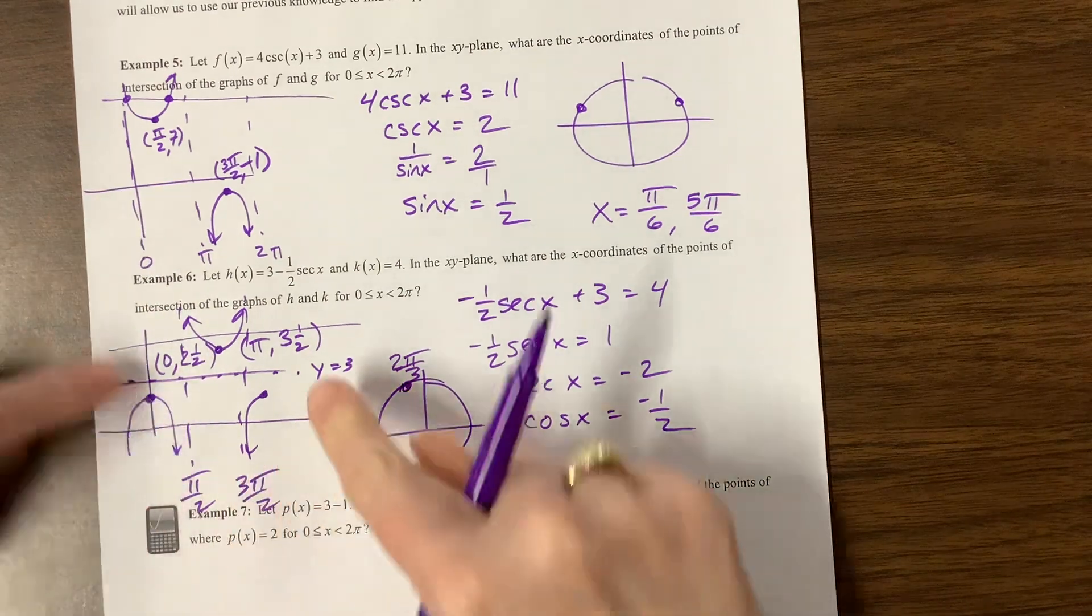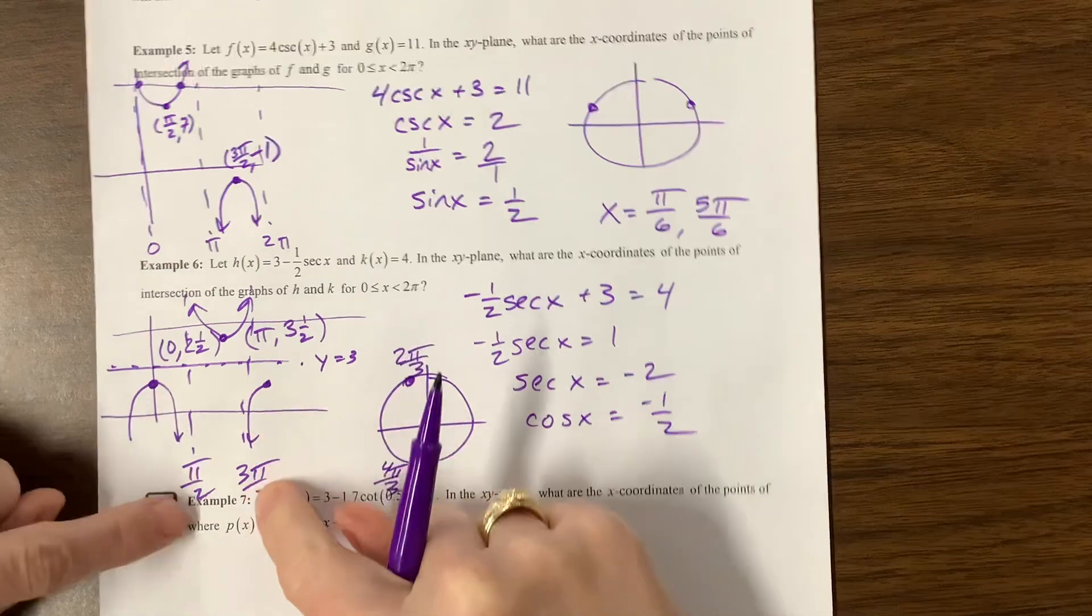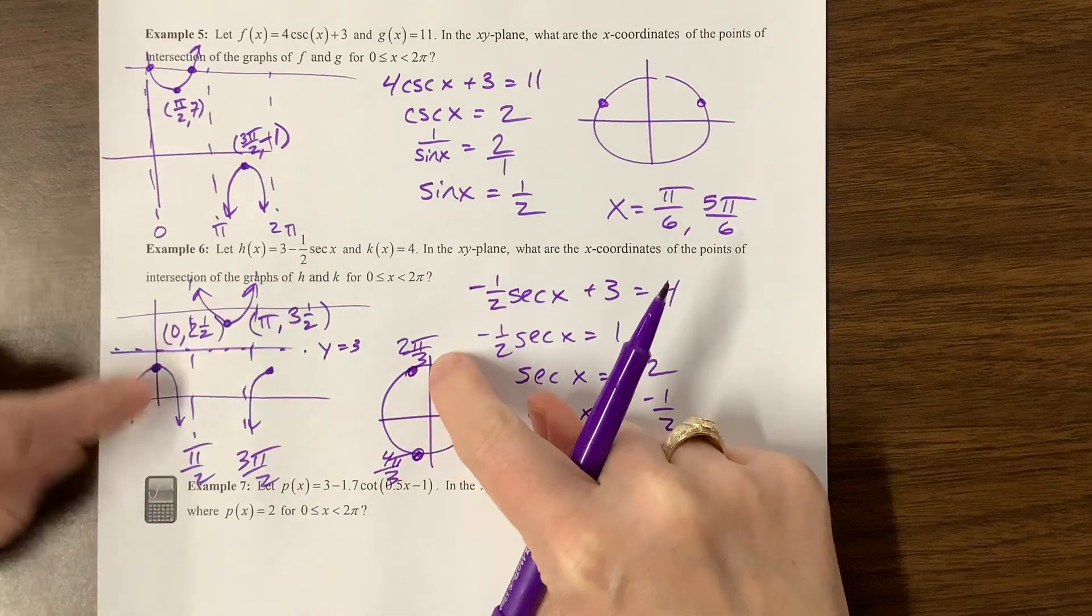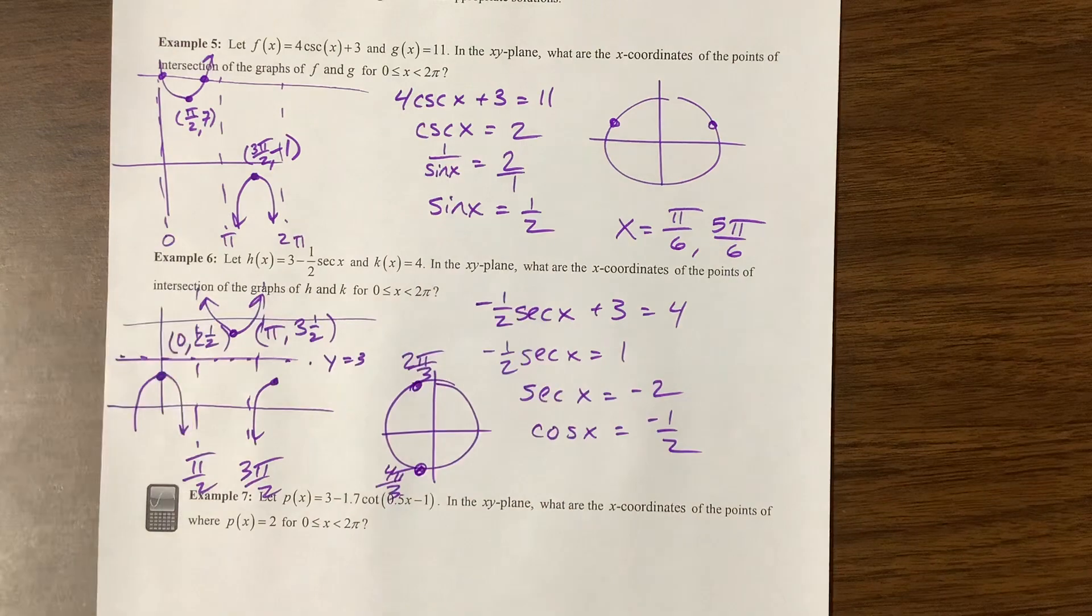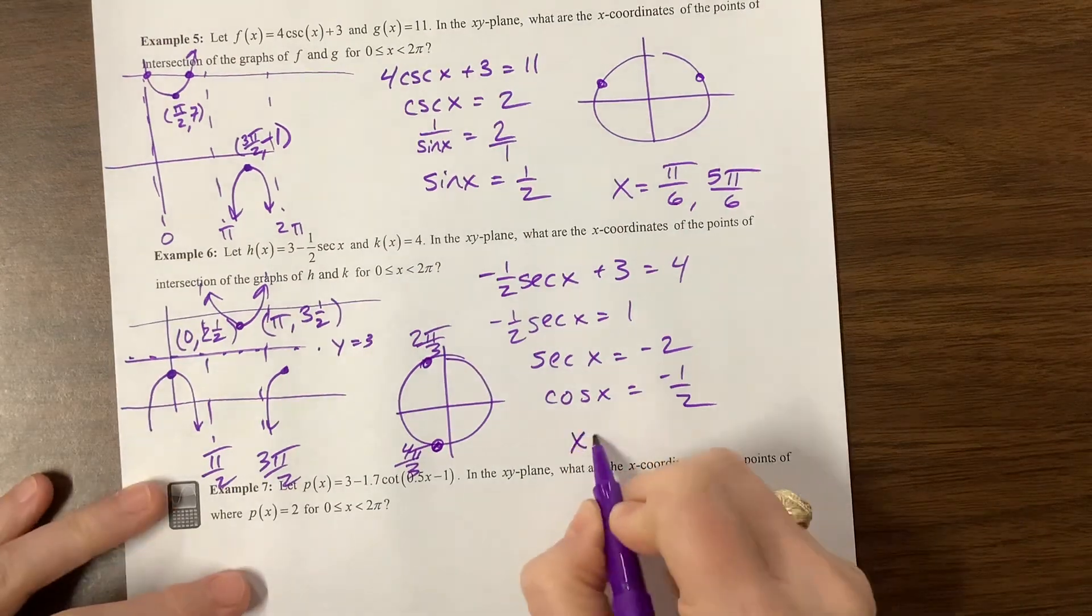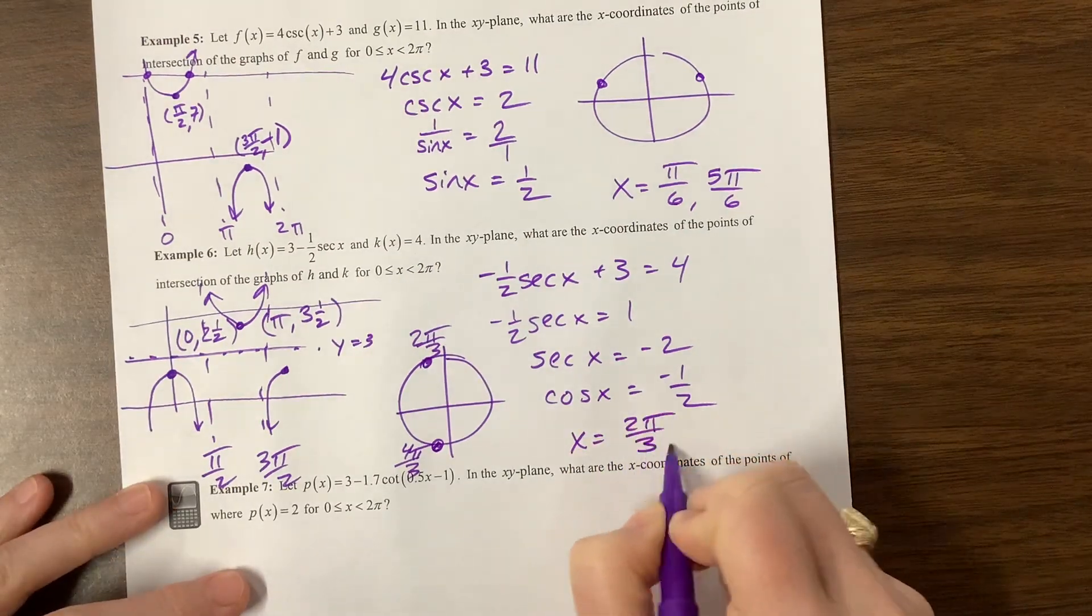So this is 2π over 3, and this is 4π over 3. What did we think it needed to be? We thought it needed to be between 3π over 2, which is here, and π over 2. So that does seem to match up to what we expect. So 2π over 3 and 4π over 3.